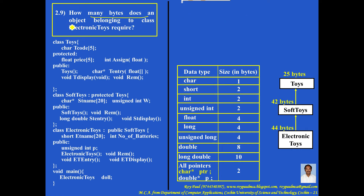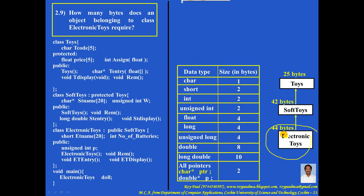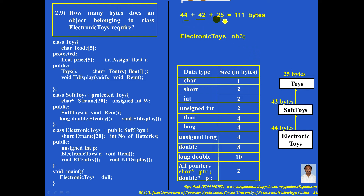How many bytes does an object belonging to class ElectronicToys require? ElectronicToys contains the properties of SoftToys, and SoftToys contains the properties of Toys. So ElectronicToys contains the properties of both SoftToys and Toys. To calculate the size of ElectronicToys, we need to add 44, 42, and 25. So the total size of ElectronicToys will be 44 plus 42 plus 25, which is 111 bytes.